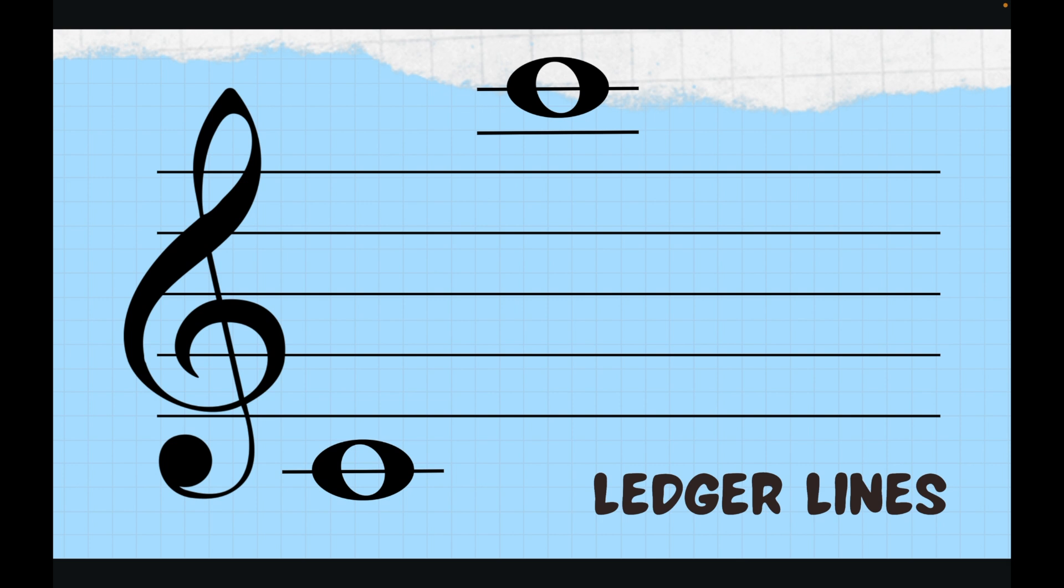Let's say we want to figure out our first ledger line note. We'll find a note that we know and work our way up or down the alphabet to figure it out. In this case, the note that I know is my very first line E and I'm going to go down one: E goes to D and then it would go down to C. So that note, that very first one, would be the note C.